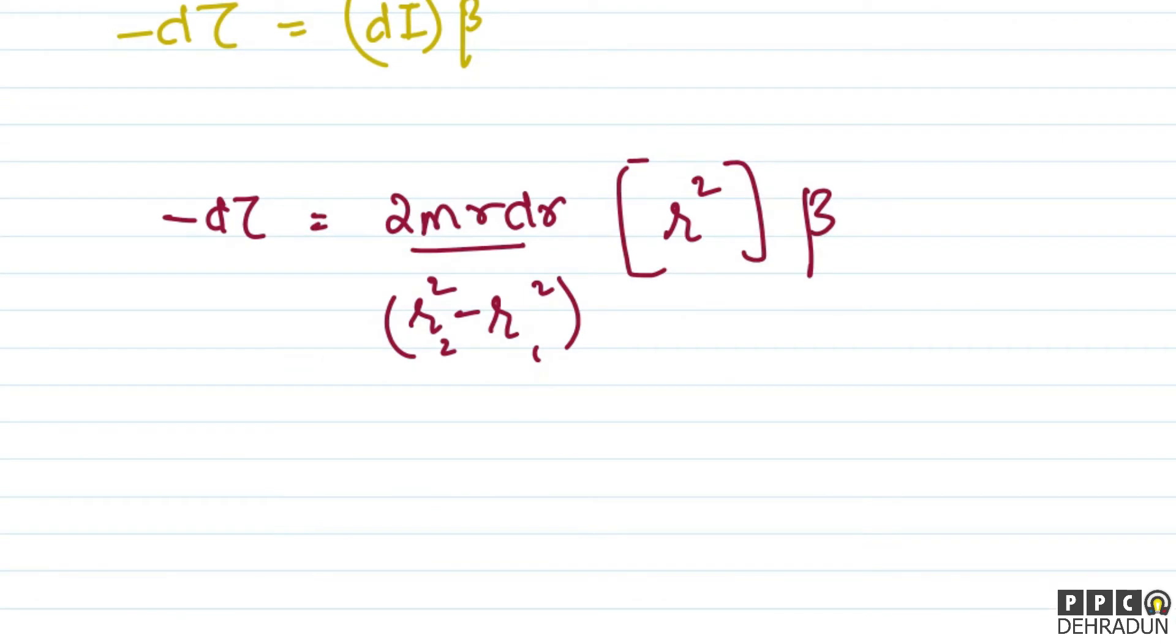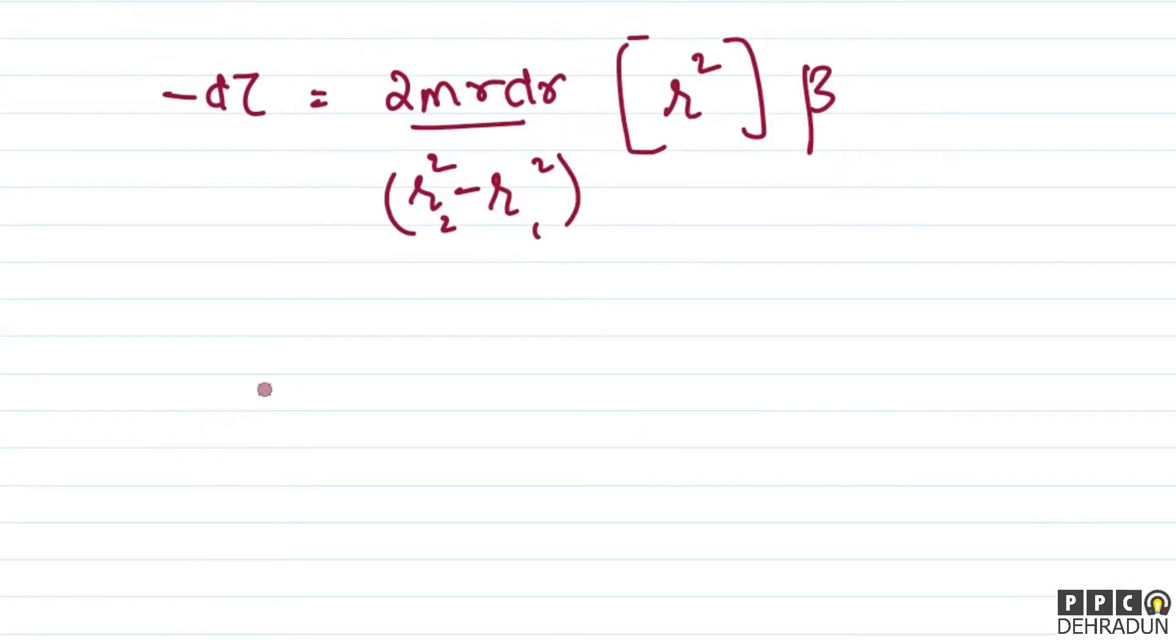So if we write this more clearly: minus d tau equals 2m beta - which is constant - upon r2 square minus r1 square - which is also constant - then we get r cube dr.